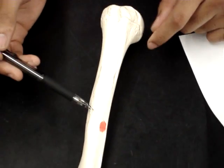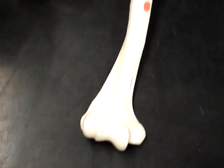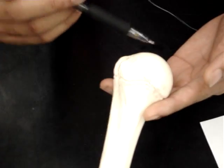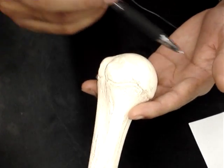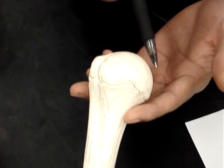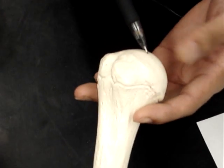We have the humerus, and this is the anterior view. We'll start with the head, which is at the top. And it's facing medial, and it's round. So that's the head.